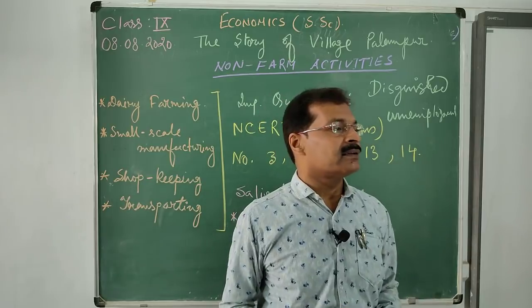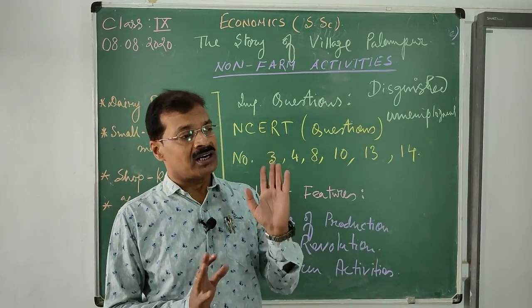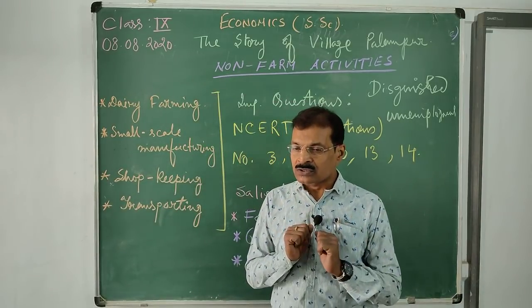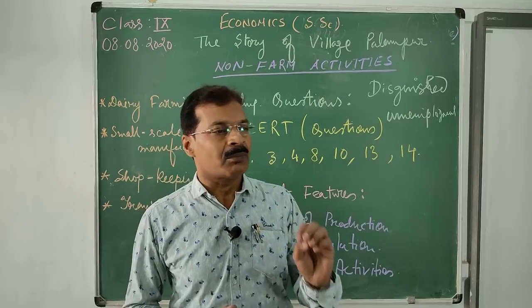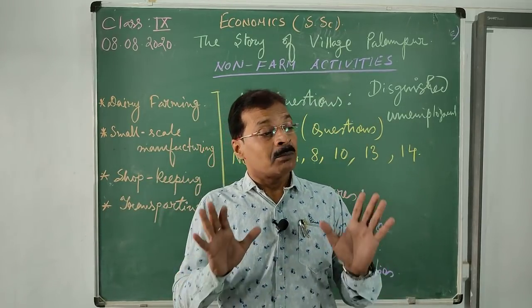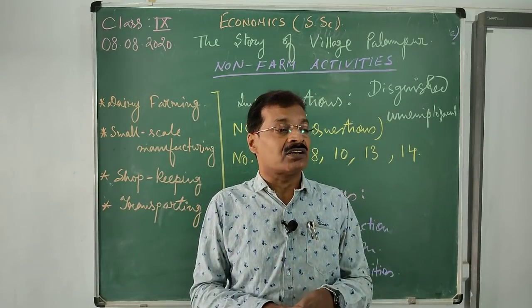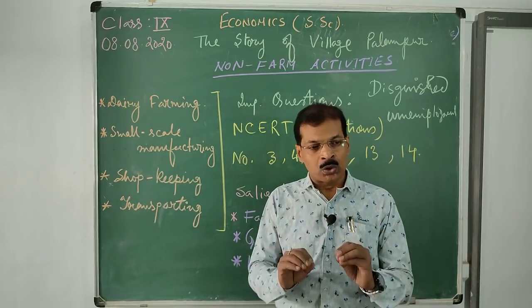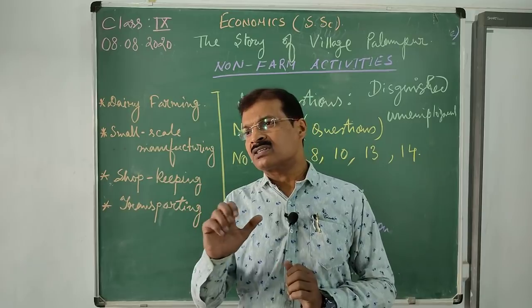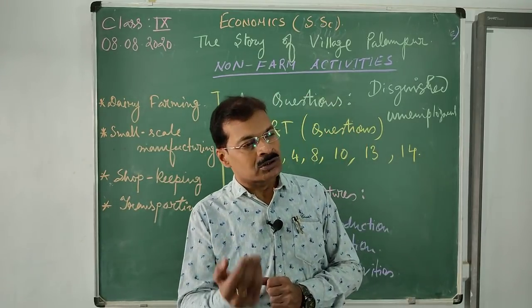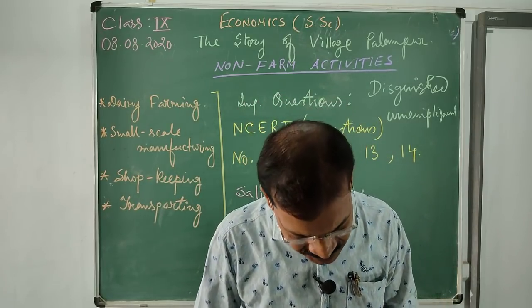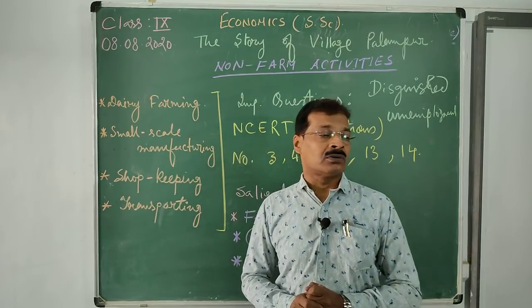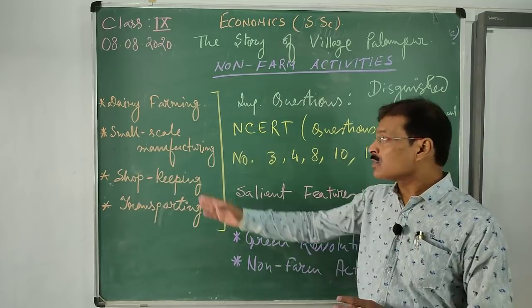The government has to make the collateral system easier so that marginal farmers can get loans. Seeds and fertilizers should be sold at lower or reasonably cheap prices so farmers can access them, and agricultural equipment should also be provided at lower cost. These are ways to promote non-farm production activities. For example, farmers can get loans for poultry farming, dairy farming, or training for small-scale manufacturing units.